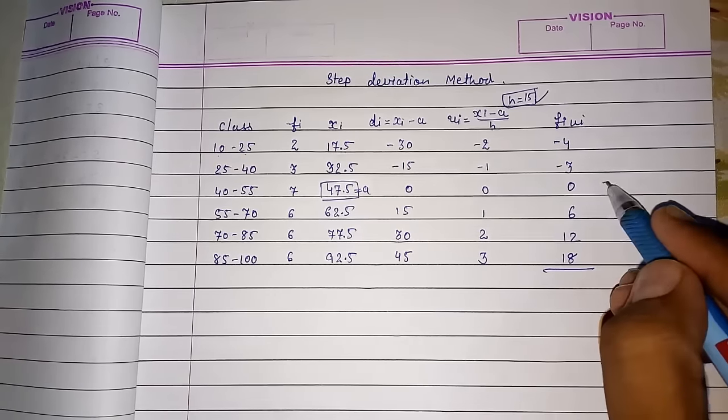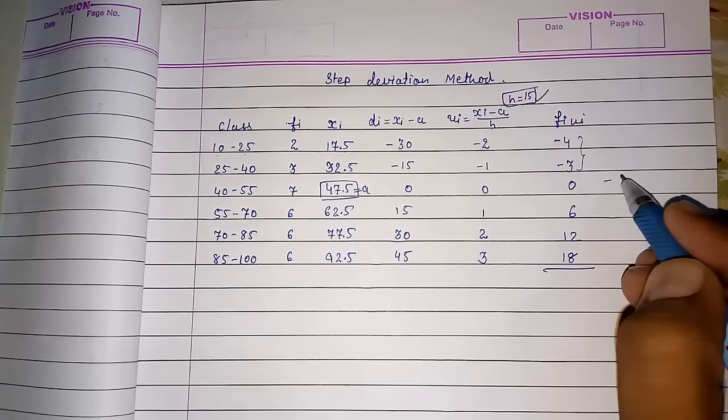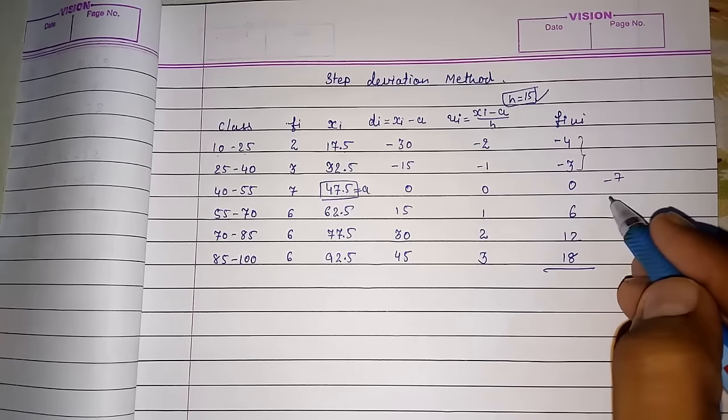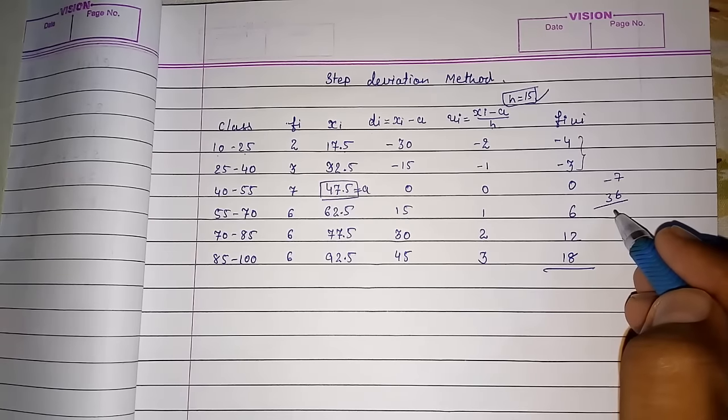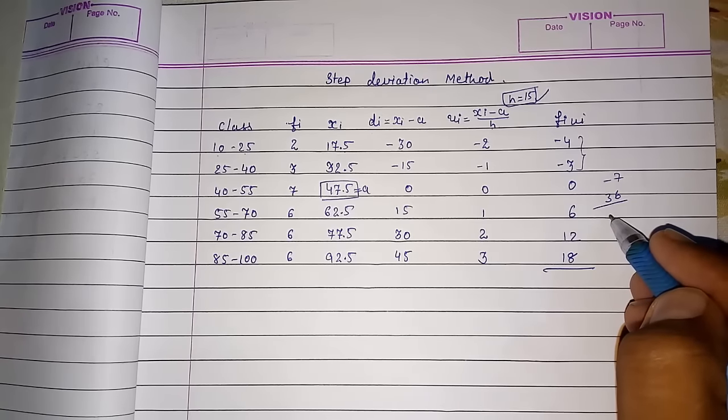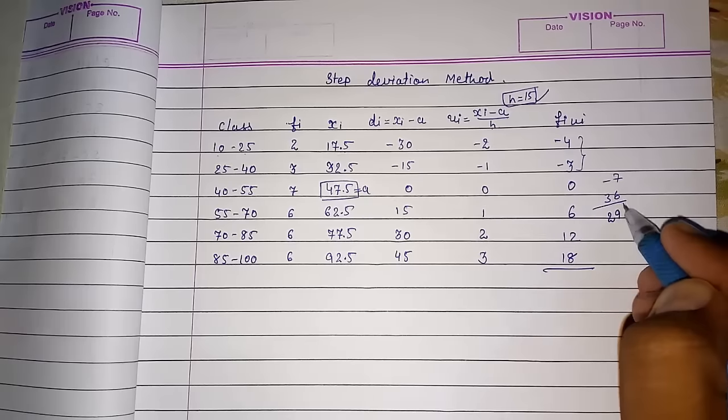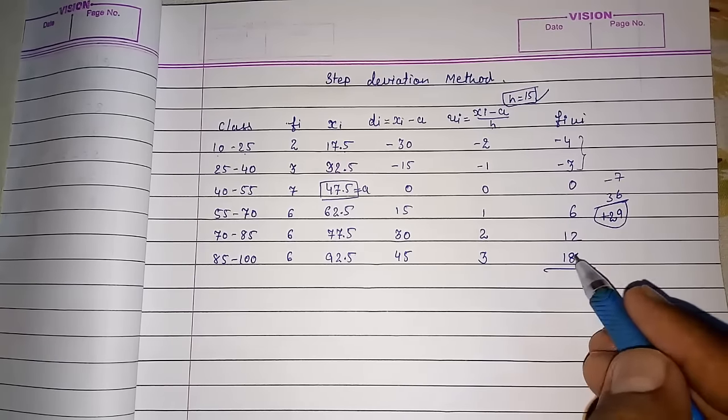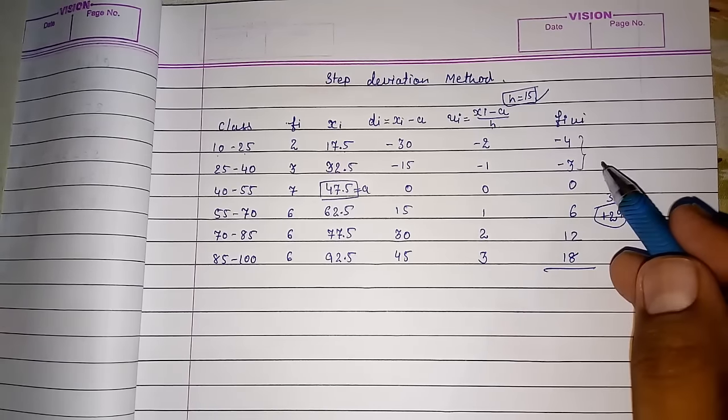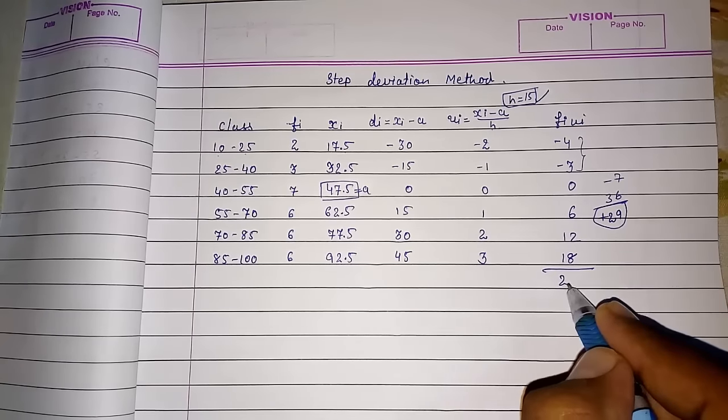Now addition of this. This is minus 7. Negative will be minus 7. And positive will be 36. So it will come 29. Plus 29. Yes. Plus 29 will come. So it's 29.